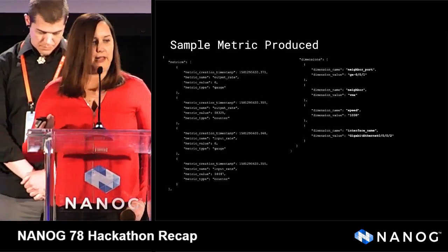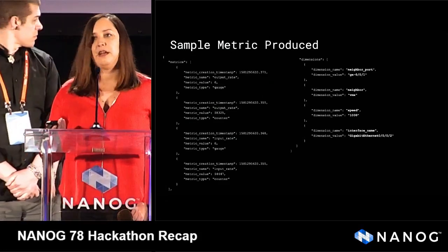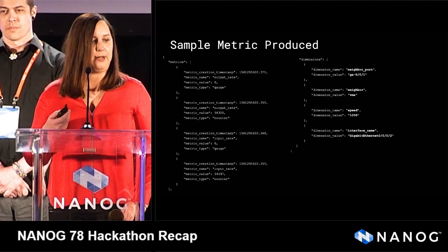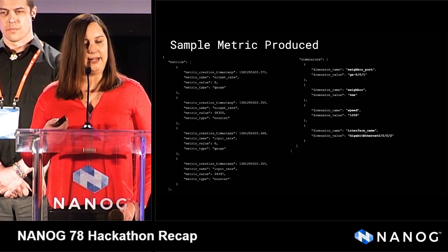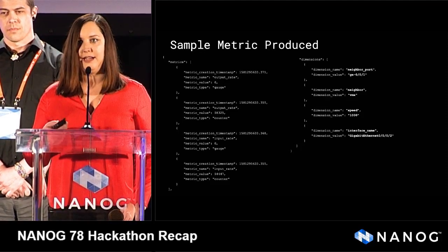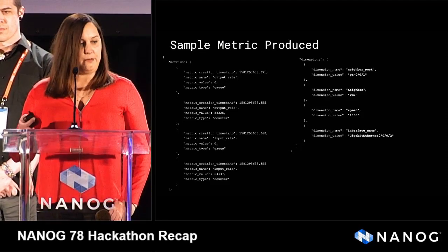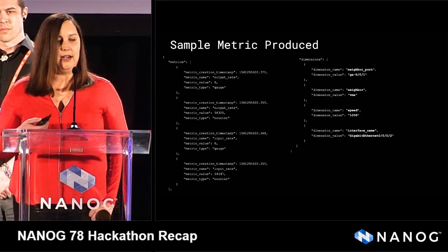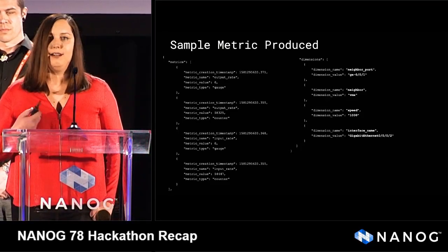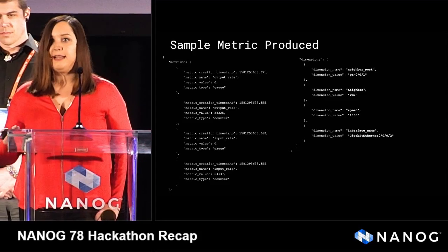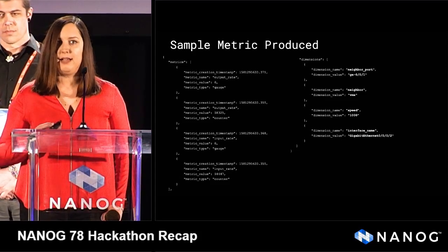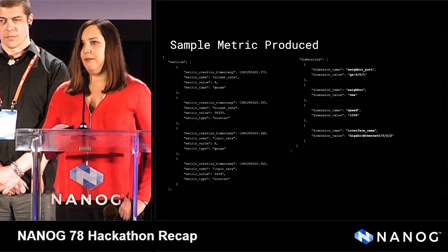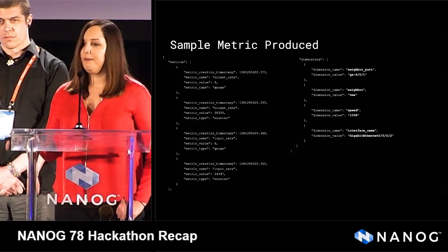This is an example of a metric produced right off the Kafka bus. You can see we get the input and output rate in both a counter and a gauge — the gauge being that converted rate. The dimensions we added were our neighbor port, neighbor name, the speed of that link so we could calculate utilization, as well as the interface name that's the source of the metric.